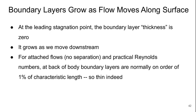Boundary layers grow as the flow moves along the surface. At the leading edge stagnation point, the boundary layer thickness is zero, and then it just grows from there as we go downstream.